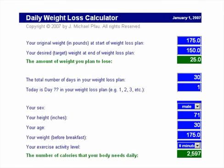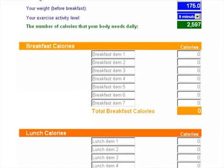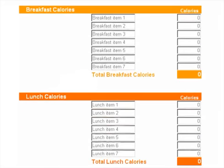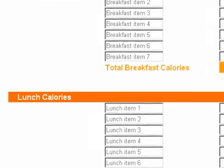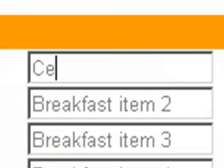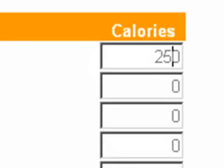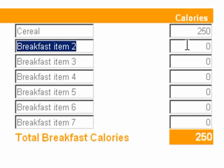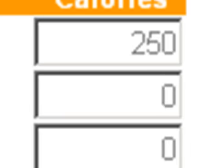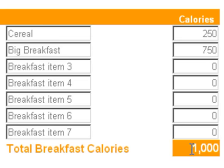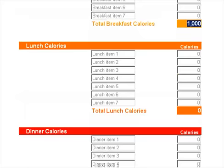Now that we've entered our vital statistics, we also need to enter in the amount of calories that we're eating on a daily basis. I have three sections of the calculator that allow us to enter in our breakfast calories, our lunch calories, and our dinner calories. You can enter specific items — for example, you could type in cereal and the number of calories, which might be 250 — or you can do a single item that summarizes everything. If you had a big breakfast at McDonald's, you would enter in the total amount, let's say 750 calories. It will calculate a running total of 1,000 for those two items. Your lunch calories would be the same — you could enter individual items or just one entry for the entire lunch.